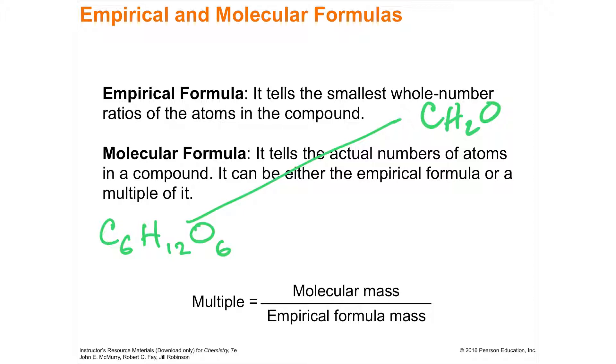You'll use the multiple, so the multiple here would be 6. And you find your multiple if you're given the molar mass. If you know how much the entire molecule weighs per mole, then I can easily find the difference between an empirical and a molecular formula.